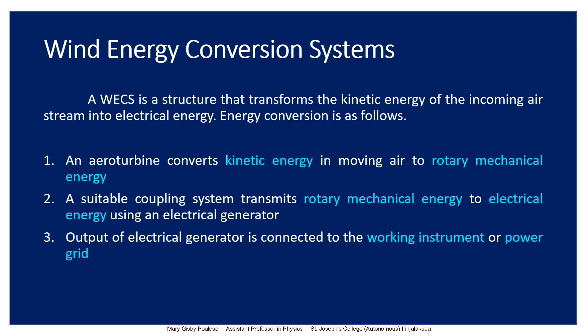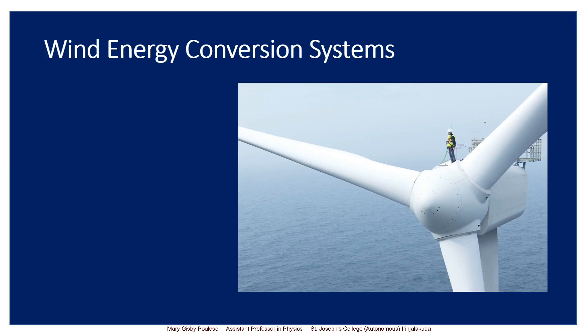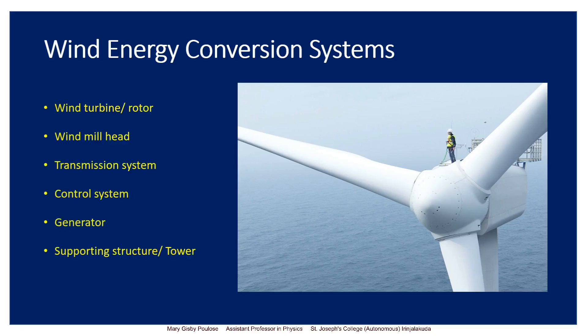In this picture you can see the size of a wind turbine — a man is standing on top of it for maintenance purposes. The parts of the wind energy conversion system include: the wind turbine or rotor, the windmill head, a transmission system, a control system, a generator, and finally the supporting structure or tower.